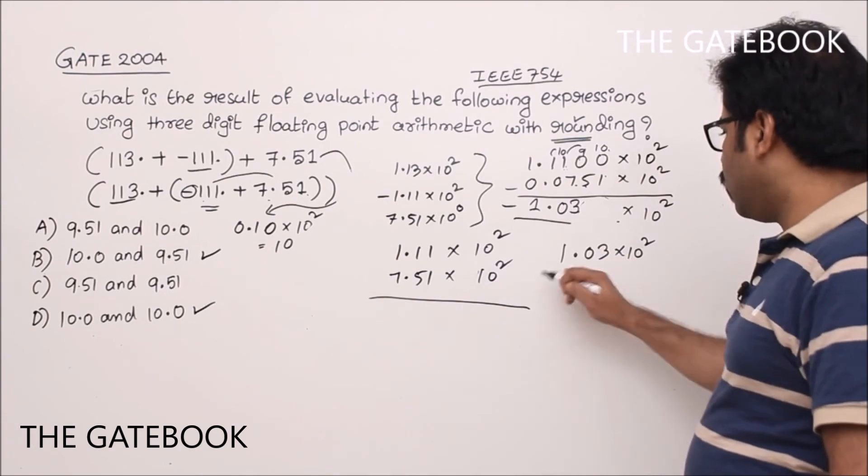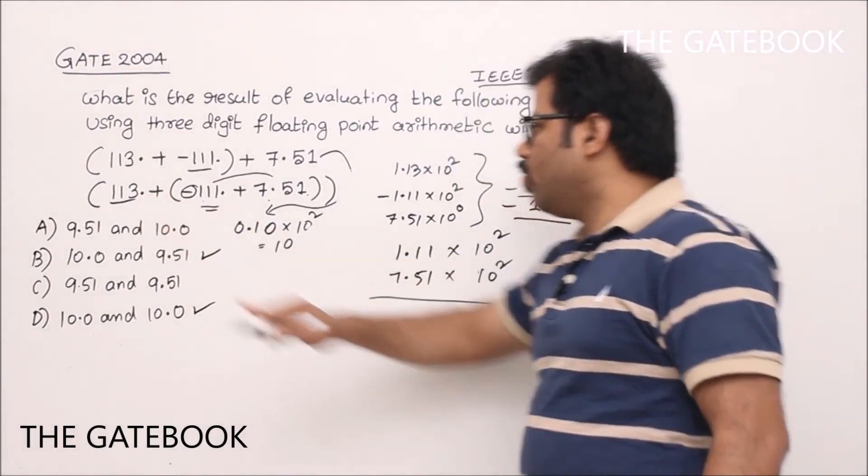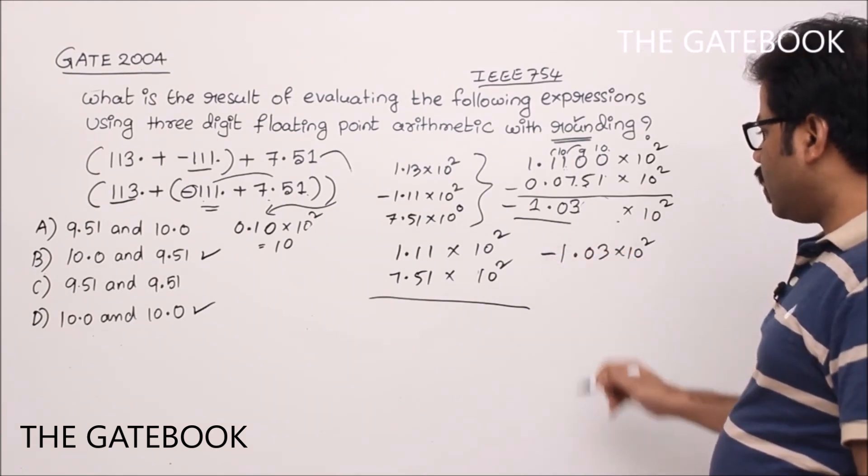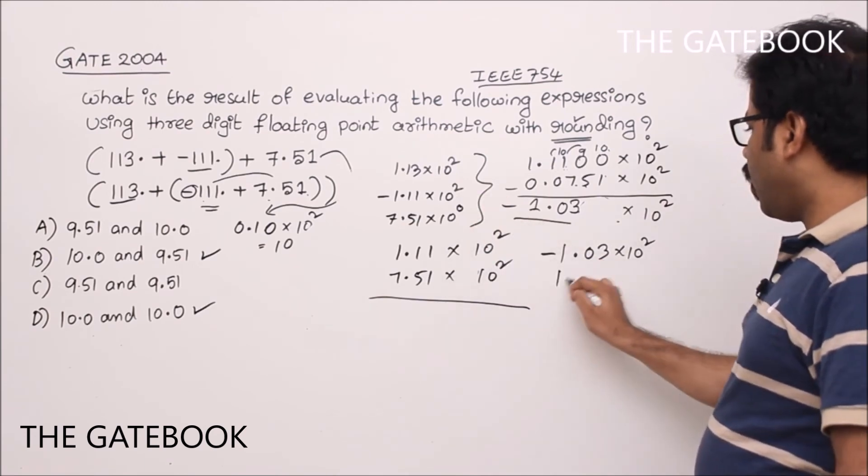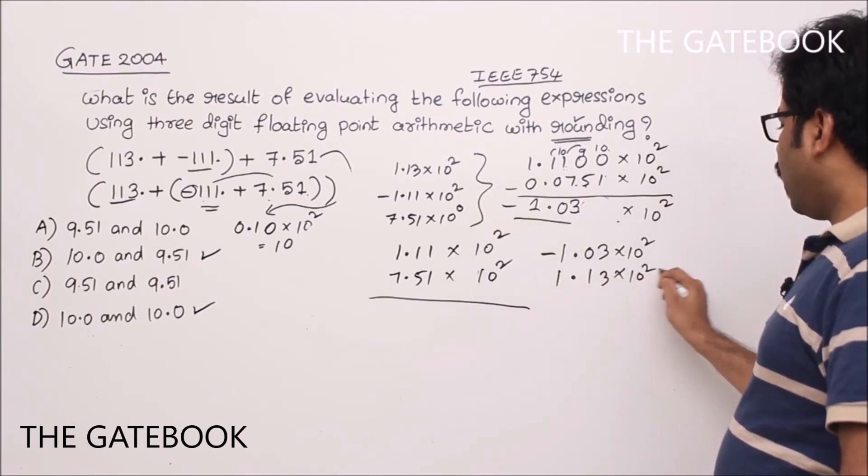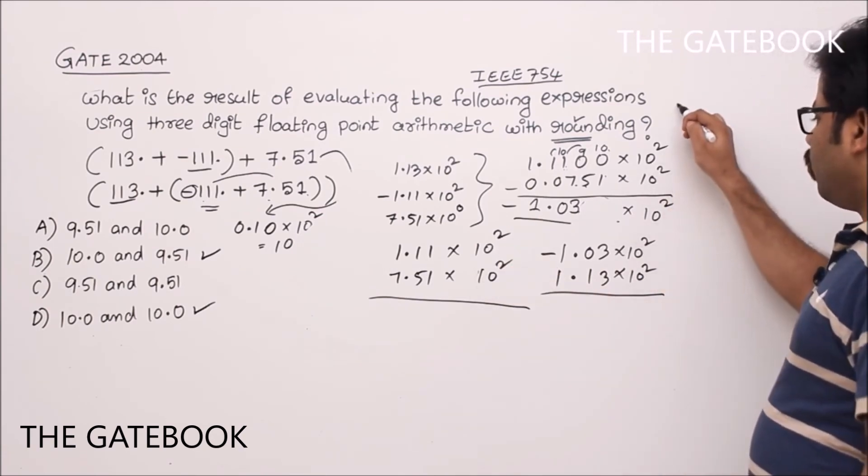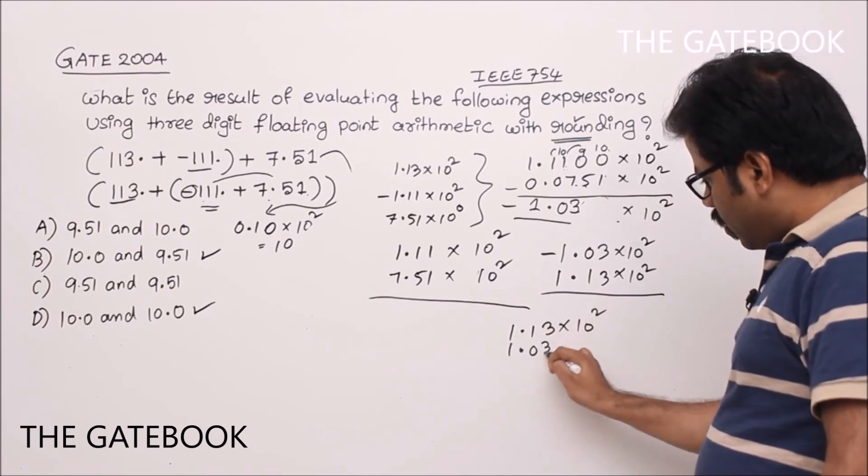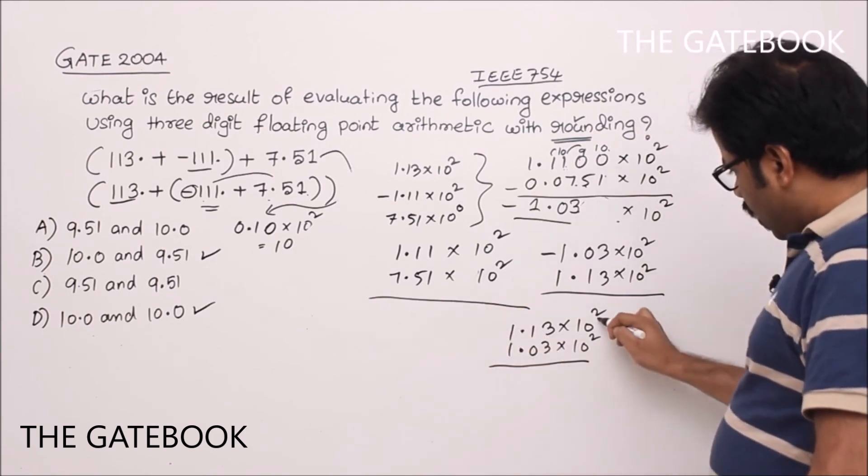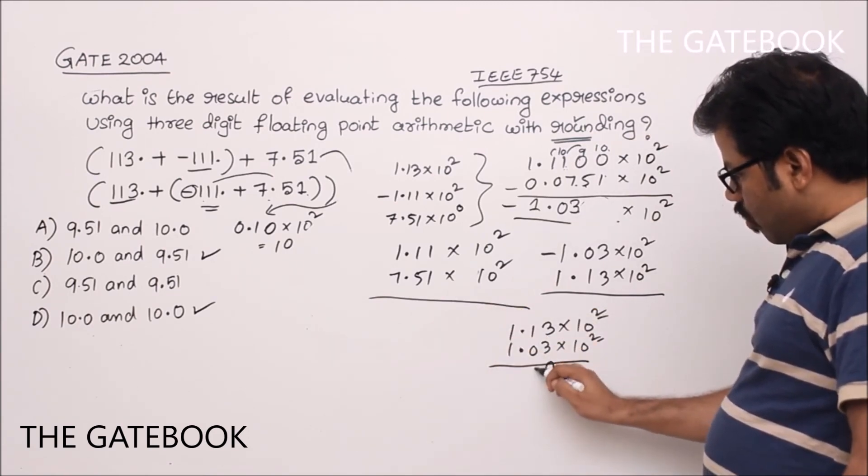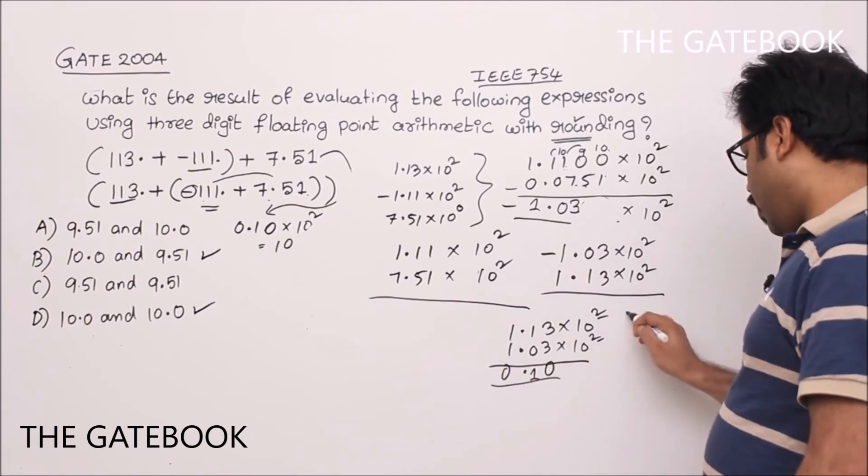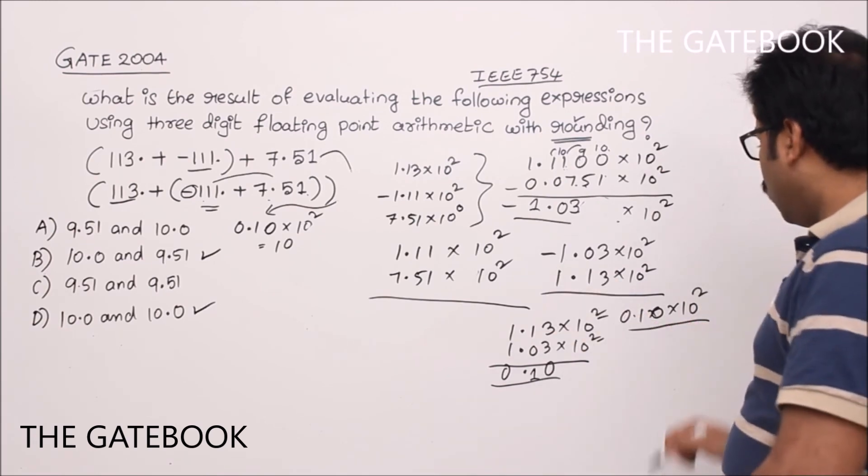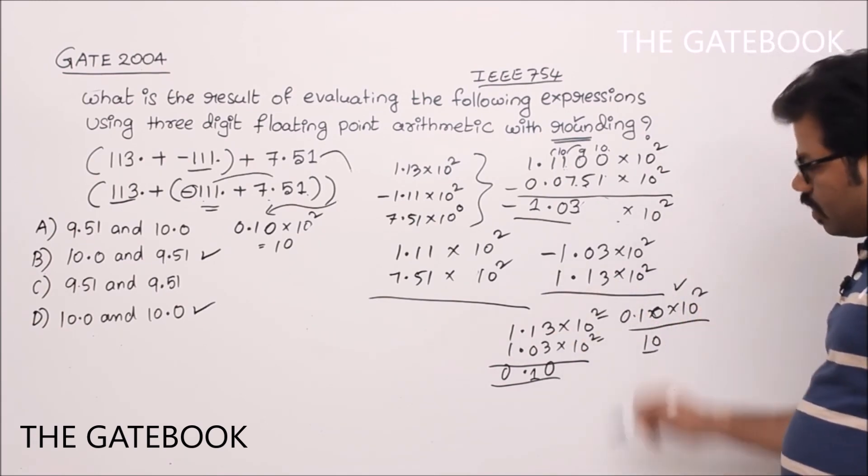Now let us keep 1.03 into 10 squared as it is. Now we have to add 113. I am writing 113, which is nothing but 1.13 into 10 squared. Again, same thing, subtraction. Let us do subtraction between this 1.13 into 10 squared and 1.03 into 10 squared. Simple. Exponents are equal, directly subtraction. 3 minus 3 is 0, 1 minus 0 is 1, 1 minus 1 is 0. So 0.10 into 10 squared. So here 0.10 into 10 square is nothing but 10.